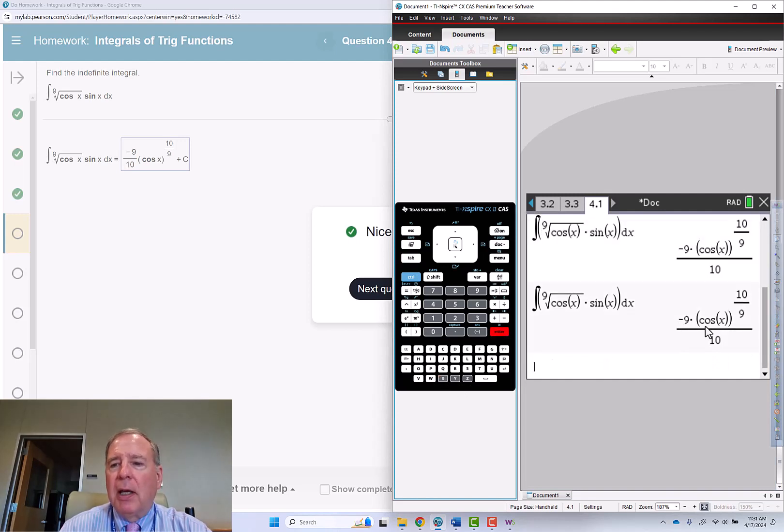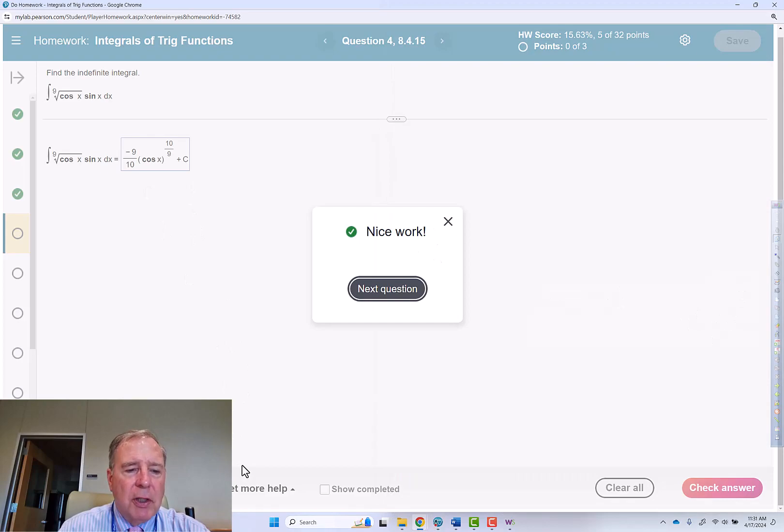And we get negative 9 tenths cosine to the 10 ninths. And as always, the calculator doesn't put in the plus c for you. So that concludes this video.